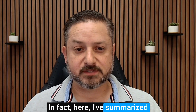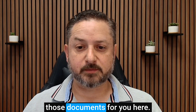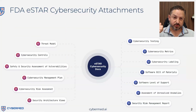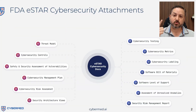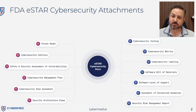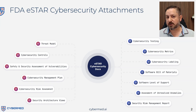Here I've summarized those documents for you. So there's 12 attachments: your threat model, your cybersecurity controls, your safety and security assessment of vulnerabilities, your cybersecurity management plan, cybersecurity testing, cybersecurity metrics, labeling, software bill of materials, software level of support, etc.